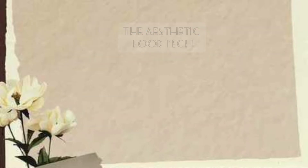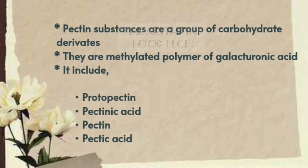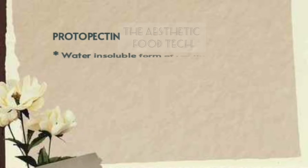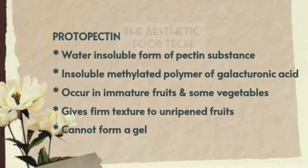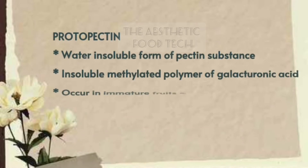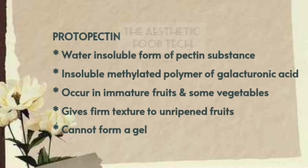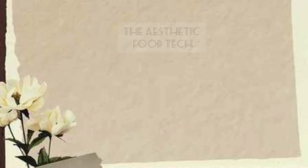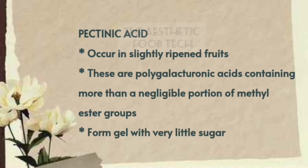Protopectin is a water-insoluble form of pectic substances and it mainly occurs in immature fruits and some vegetables. Its main function is that it gives firm texture to unripened fruits. In other words, protopectin is an insoluble methylated polymer of galacturonic acid. Another peculiarity is that it cannot form gel.